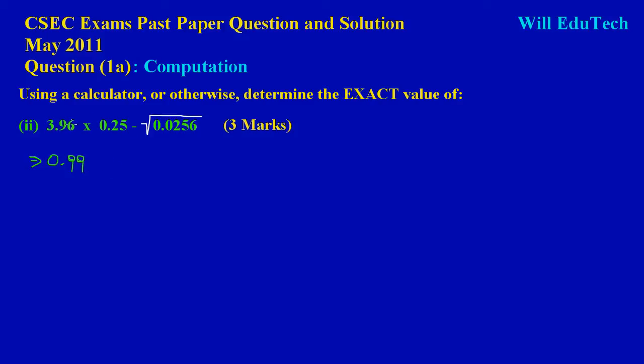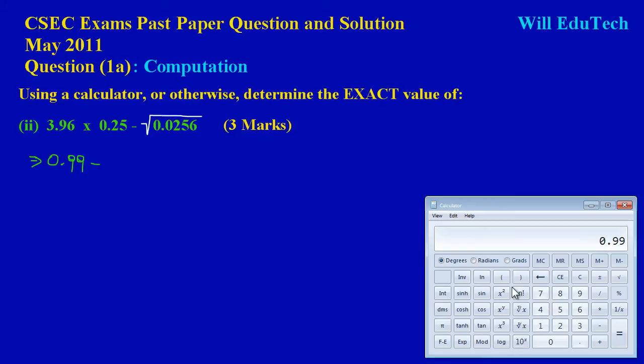And after I multiply this, then I'm subtracting from that the root of 0.0256. Let's just pull this up back quickly. If you're not sure about multiplying decimals, you could always visit our playlist for a more in-depth understanding of how you treat your decimals.